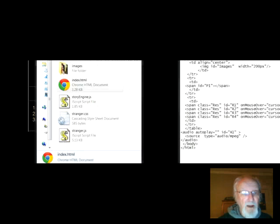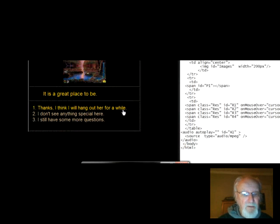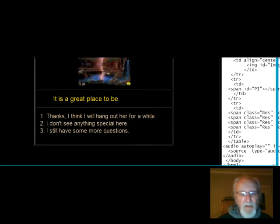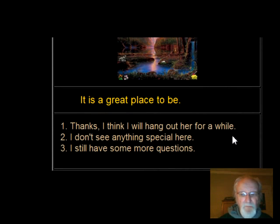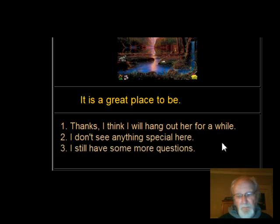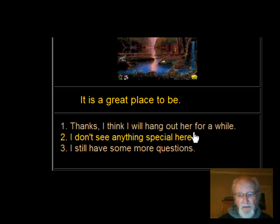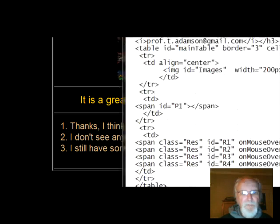When I do a mouse over — notice it changes the color, and that gives the illusion as if it's a hyperlink. The other thing that gives the illusion is that when I move the mouse over, notice it changes into a hand — that's all done with style sheets. So what I'm doing is using JavaScript with the Document Object Model, which is part of the engine, and it gives the illusion that these are hyperlinks, but they're really not — they keep everything right in this single document.